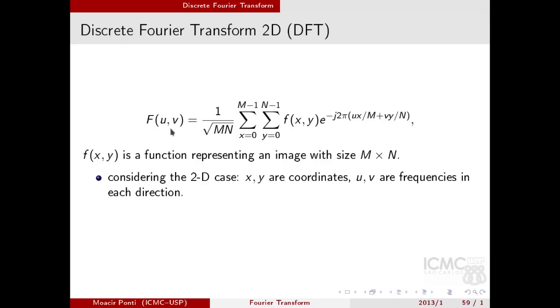u and v are the frequencies in the two directions, also m and n as a result of the resolution of the image. As in the 1D case, we must evaluate the equation for every value of u and v. So I'll evaluate the frequencies from 1 to m minus 1 in one direction, and from 1 to n minus 1 in the other direction.